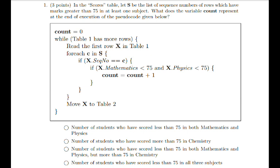The question reads: in the scores table, let S be the list of sequence numbers of rows which have marks greater than 75 in at least one subject. What does the variable count represent at the end of execution of the pseudocode given below?